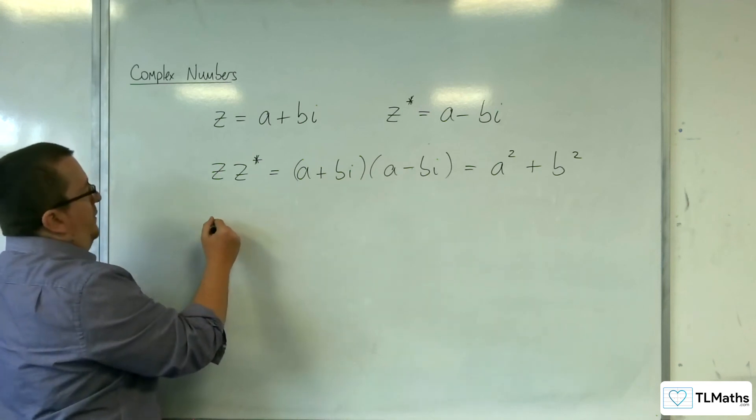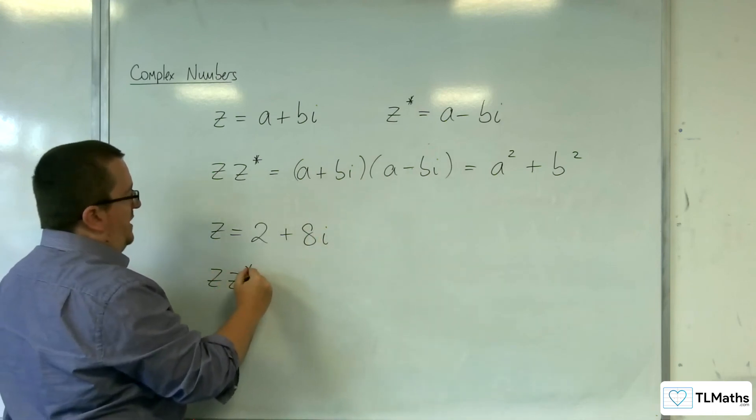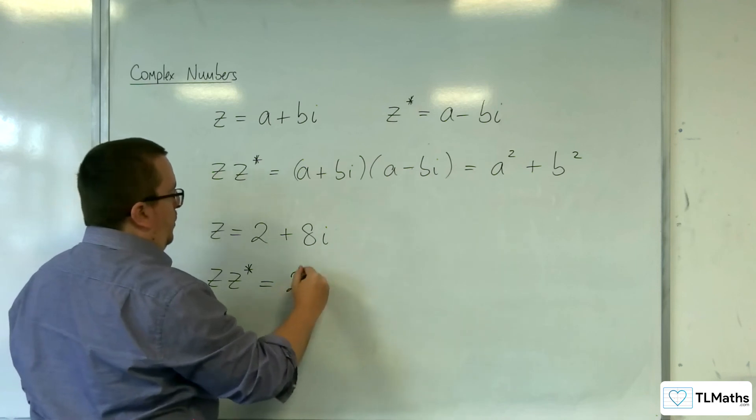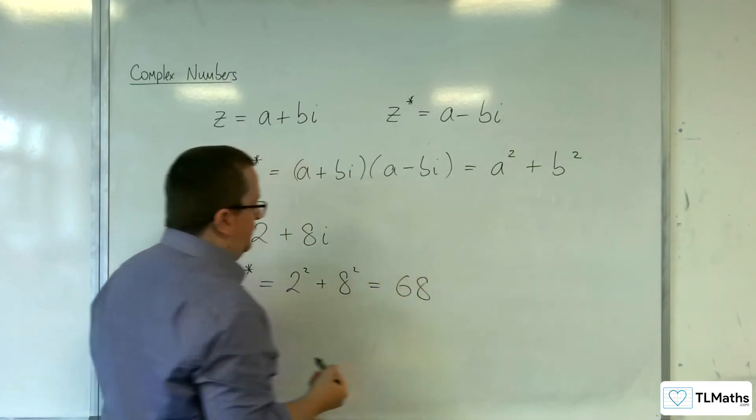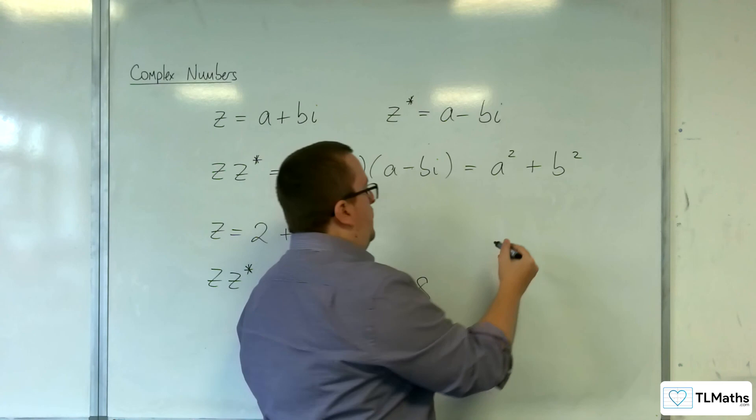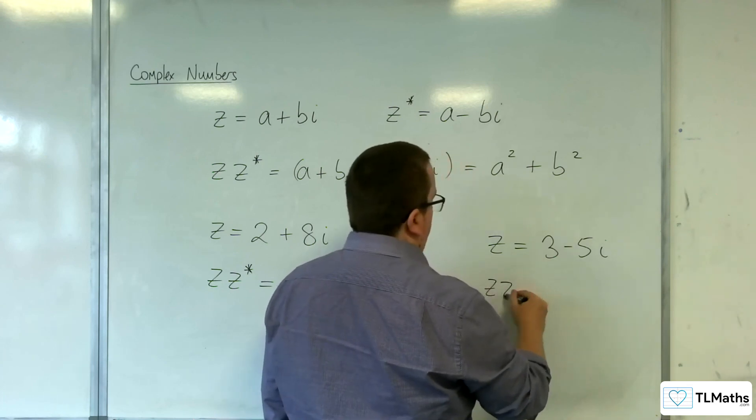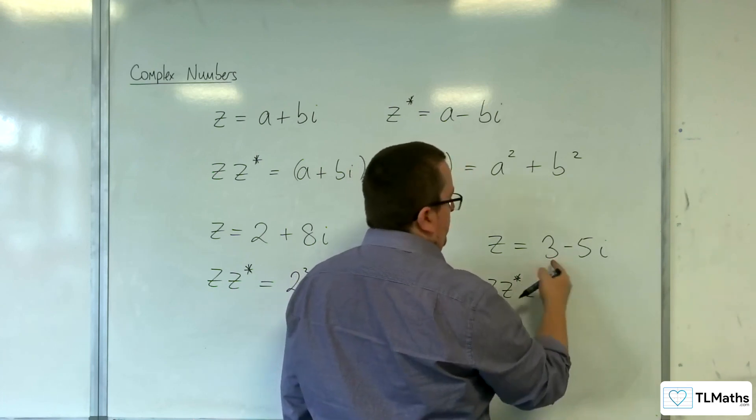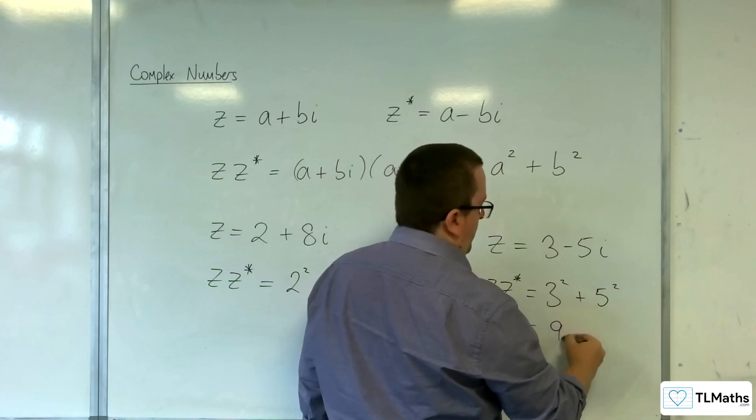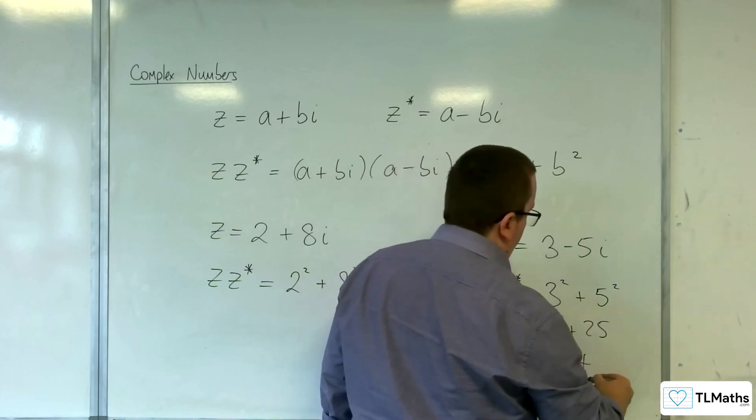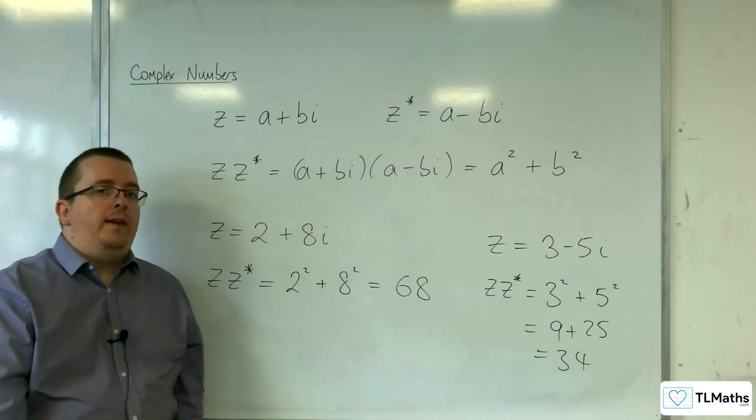So if you had z = 2 + 8i, for example, then z times z* equals 2² + 8², so 4 + 64. Likewise, if you had z = 3 - 5i, then z times z* equals 3² + (-5)², so 9 + 25, which is 34. So that's how you can work with the complex conjugate and what it actually is.